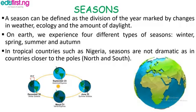In the southern hemisphere, summer falls between December to February. The fourth season is autumn, which is characterized by the falling of tree leaves, and it occurs between September to November every year.